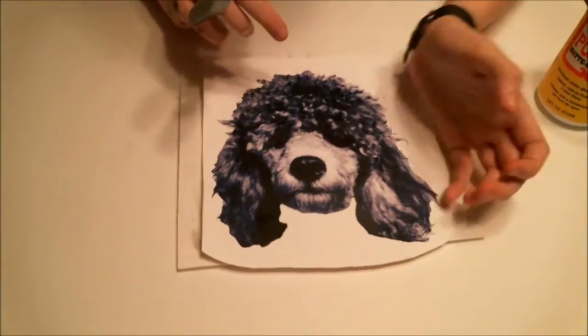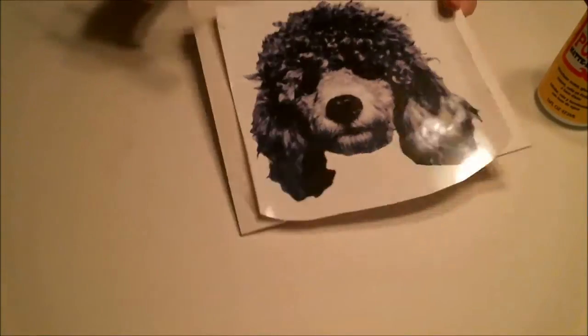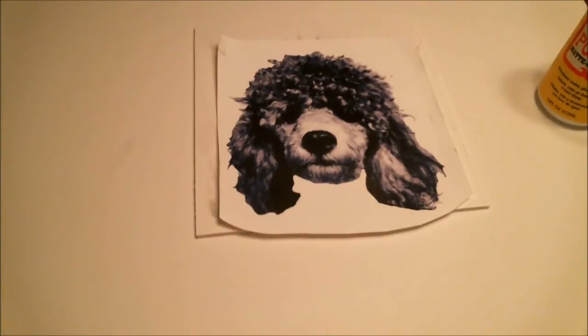Make sure you have all of the edges as best as possible and put a few books on top so the weight will help push out air bubbles and keep the image flat while drying. Set off to the side and you're ready for step two.